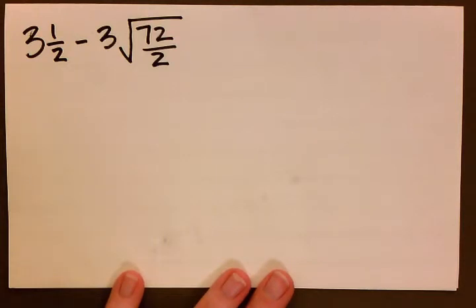The question is 3 and 1 half minus 3 times the square root of 72 over 2. The instructions tell us to simplify. So we have here a subtraction problem with fractions.